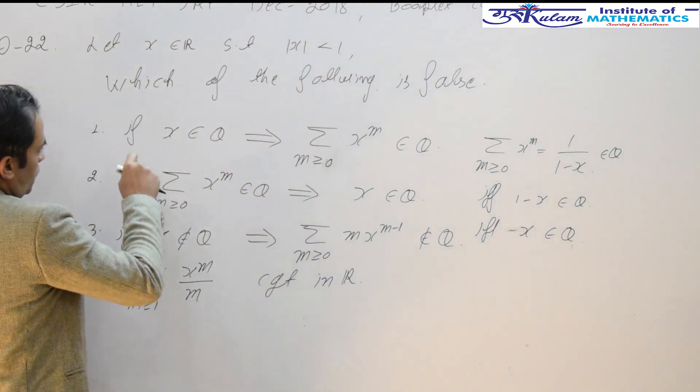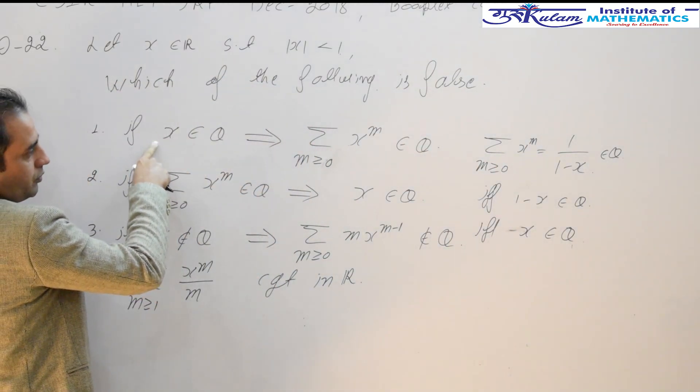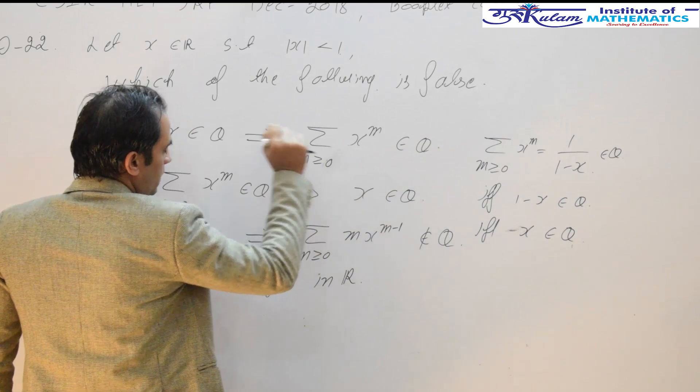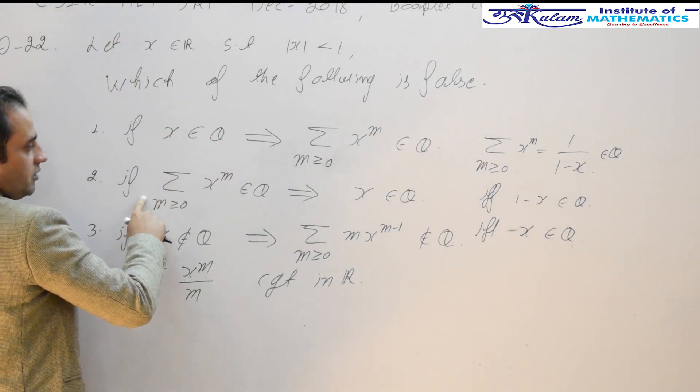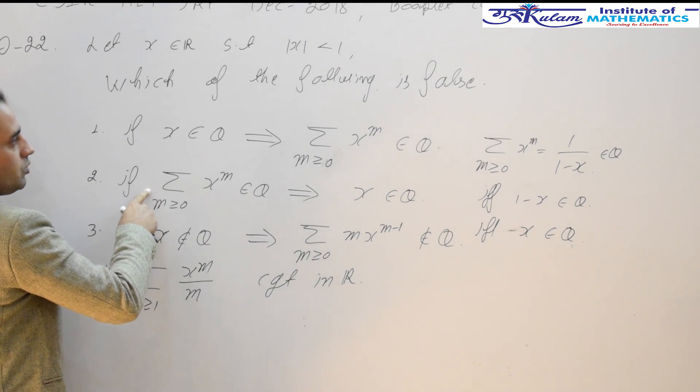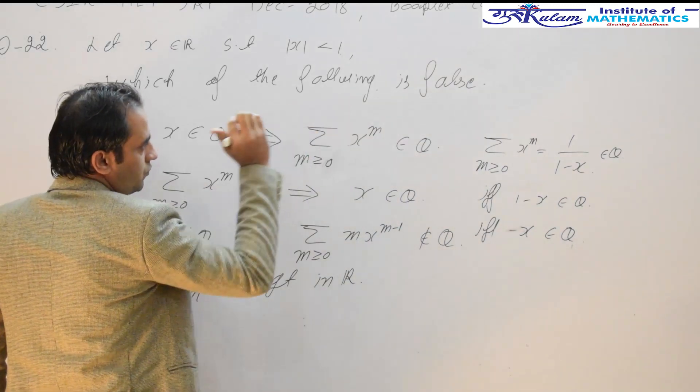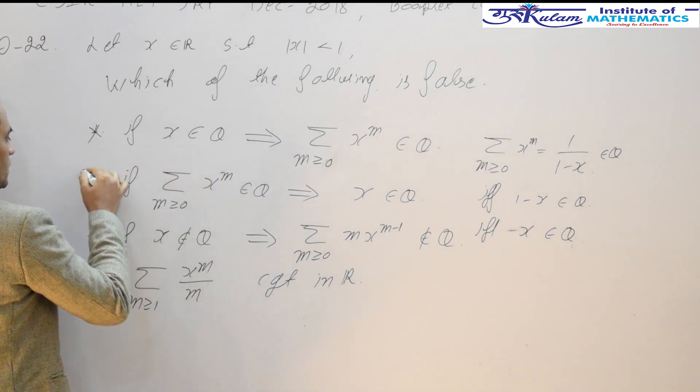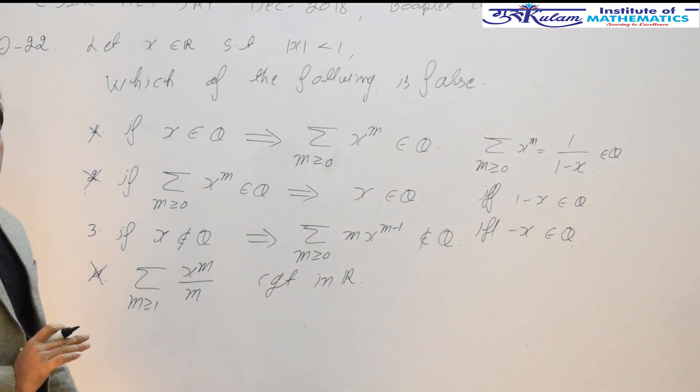Hence, the first statement—if x belonging to Q, then this sum is a rational number—and if this sum is rational, then x must be a rational number. Both statements are correct. We have to choose the false statement, so definitely these options are incorrect.